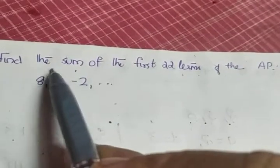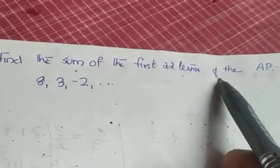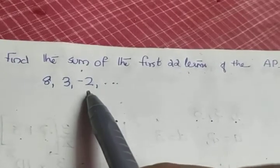The first question is: find the sum of the first 22 terms of the AP: 8, 3, -2, etc.